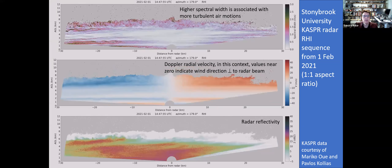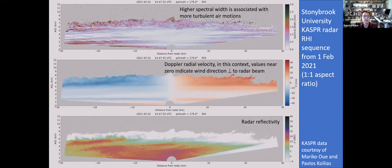The bottom panel shows reflectivity with lots of detail. I want to draw your attention to the generating cells — overturning circulations associated with the turbulence and vertical air motions — leading to ice streamers. But the ice streamers are very tilted, and they don't get very far below the generating cells before things really smear out. We can see these overturning convective instabilities near cloud top leading to production of precipitation-size ice, but there's no clear vertical continuity, in large part because of the strong horizontal wind shear associated with these winter storms.